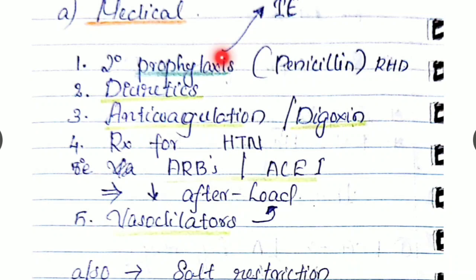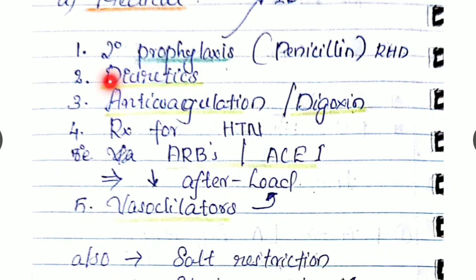As the pressure between the valve is high, valve gets injured. So the chance of infective endocarditis is more. We have to prevent that by giving secondary antibiotic prophylaxis. If there is any chance of pulmonary edema, we have to give diuretics. For the prevention of embolism, we have to give anticoagulants. And for reducing the heart rate, we have to give digoxin as prophylaxis against atrial fibrillation.